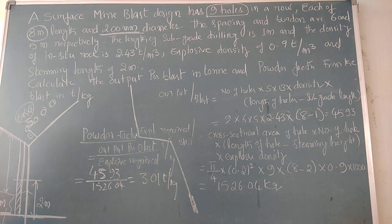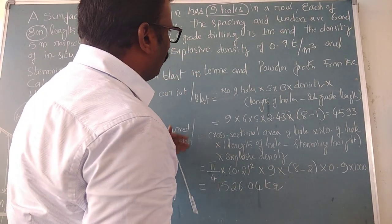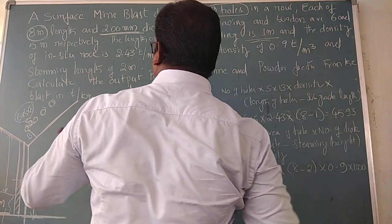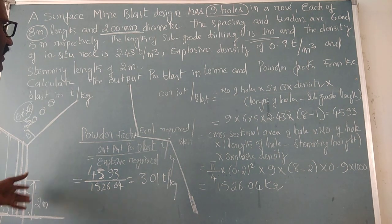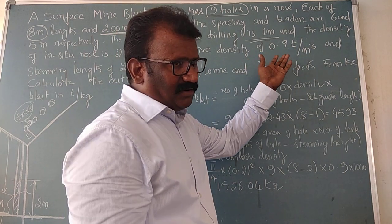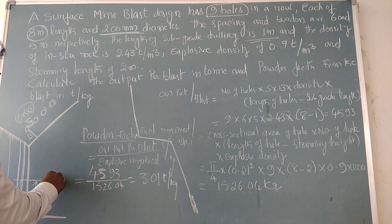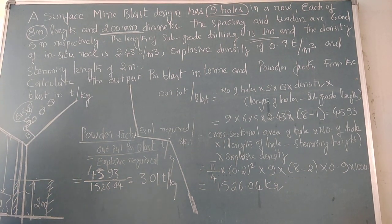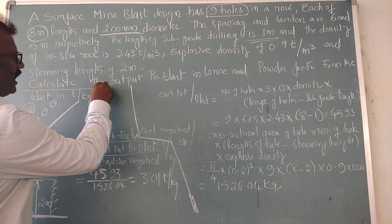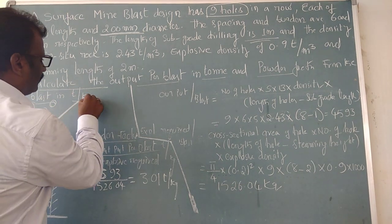The subgrade length is also given as one meter — this is to prevent toe formation. The in-situ rock density is given. The explosive density is also given: 0.9 tons per meter cube. The stemming length is also given as two meters — the hole is filled with stemming for protection. The target is to calculate the output in tons and the powder factor from the blast in tons per kg.